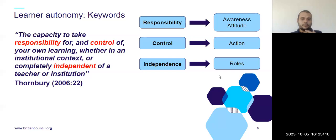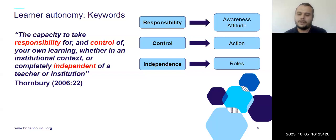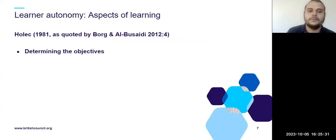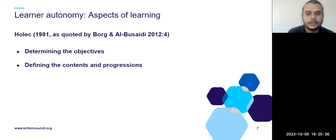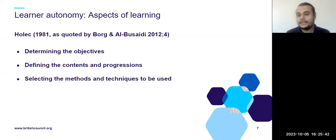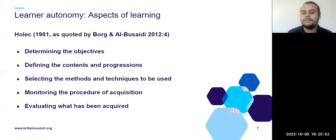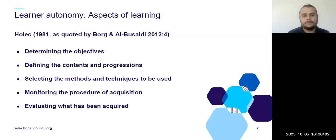However, Thornbury doesn't specify which aspects of learning they are responsible for and take control of. Holec, years before, defined those aspects as: determining the objectives of the course or lesson; determining the contents and progressions, i.e., the syllabus; selecting the methods and techniques to be used; monitoring their own procedure of acquisition; and evaluating what they have acquired — through reflective practice, ongoing assessment, or formative assessment.